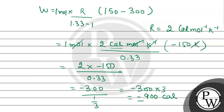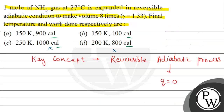We have our answer. The negative sign shows that the gas has expanded and work is done by the system, so the magnitude of work done is 900 calories. The final temperature is 150 Kelvin and the work done is 900 calorie. So the answer to this question is option A. Hope you understood it well. Best of luck.